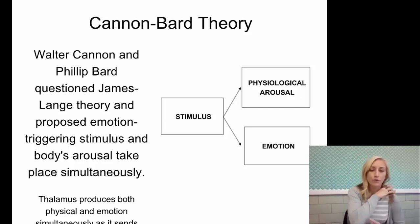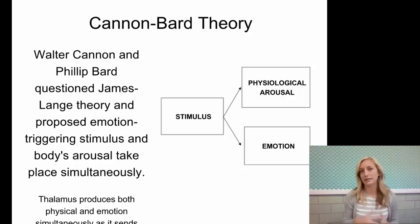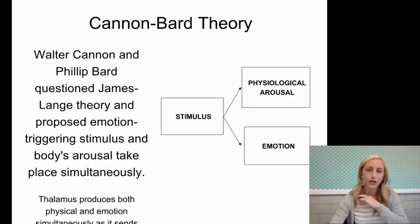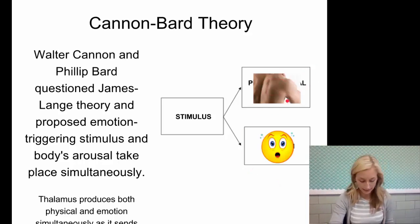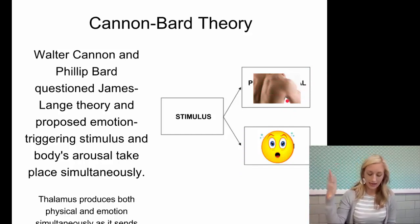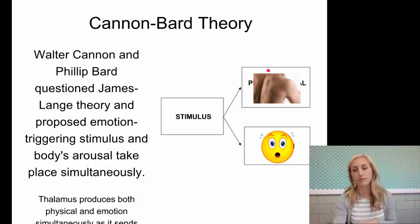With Cannon-Bard, the thalamus produces both the physical response and emotion simultaneously as it sends messages throughout the brain and body. So you have the stimulus, you have the physiological response — let's say perspiring — like if someone puts their hand on your shoulder from behind, you tense up, and then you have the emotion of being startled.